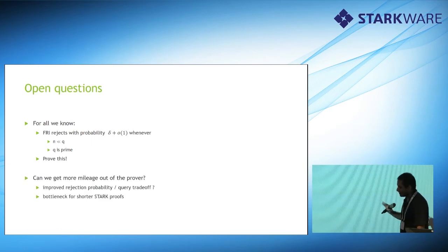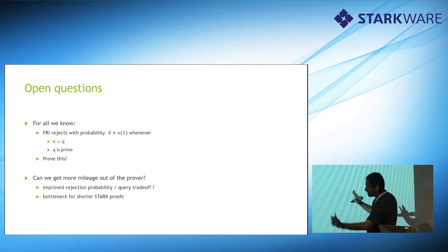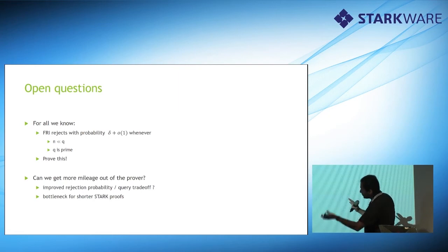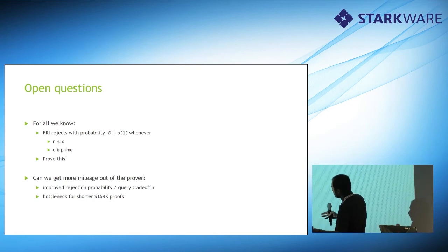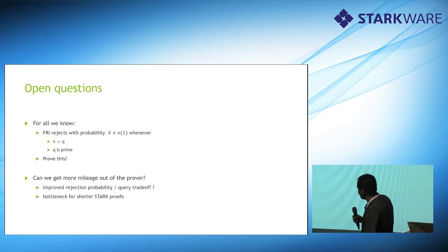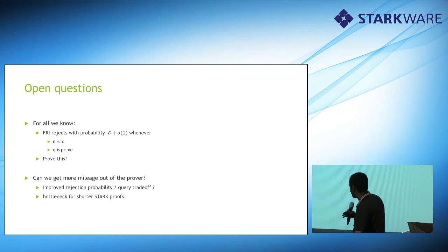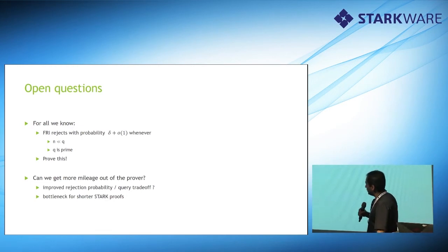Two quick open questions. First, in some settings we believe FRI's rejection probability is actually exactly delta — this would give optimal possible soundness for FRI and is a really nice question. Second, more broadly, can you get more out of the prover? The prover can answer anything you want — we should use that. It would be good for getting an improved rejection-probability to query trade-off for both polynomial proving and STARKs.